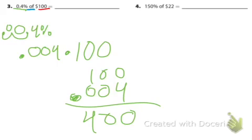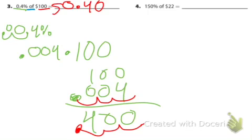And now we need to move the decimal over 1, 2, 3 times. So we're talking about money. So the answer is 40 cents.